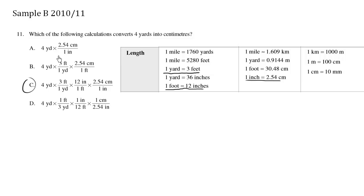Let's find out why these other choices are incorrect. Choice A, we're multiplying 4 yards by 2.54 centimeters per inch. Now the yards and the inches do not cancel out, so this is wrong.